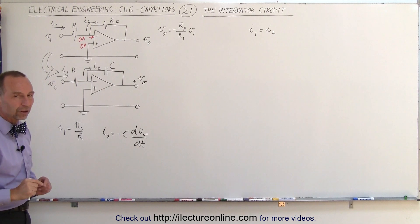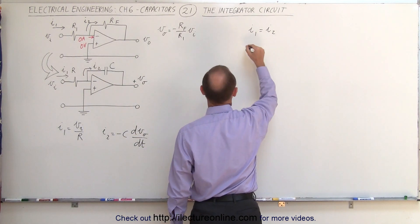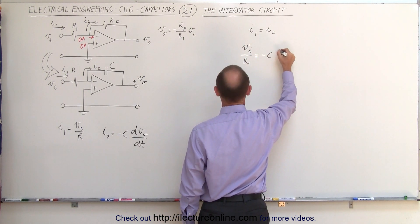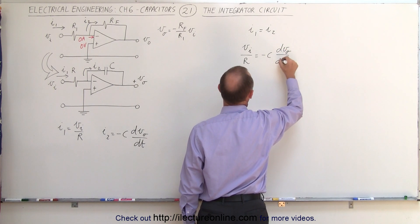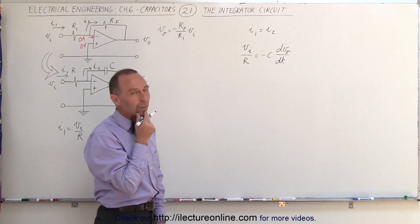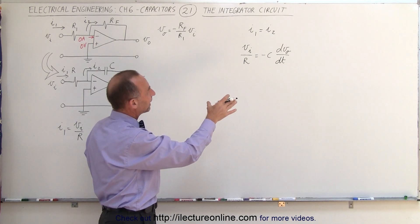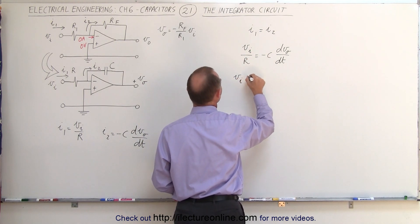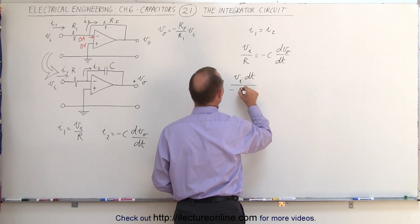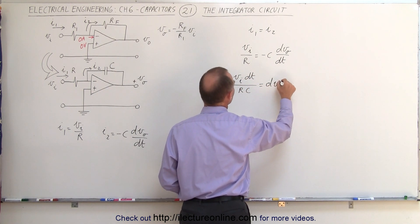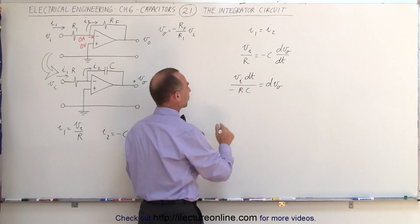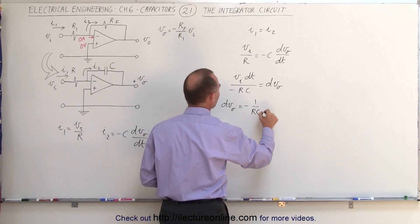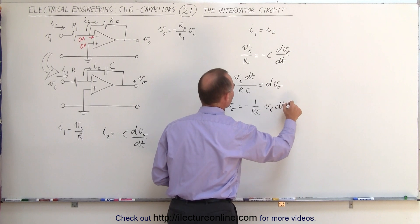We can now set those two equal to each other. We get V_i divided by R is equal to negative C times dV_out over dt. Solving that equation for the output voltage, we bring terms across to write V_i times dt divided by minus RC is equal to dV_out. Turning the equation around, dV_out equals minus 1 over RC times V_i dt.